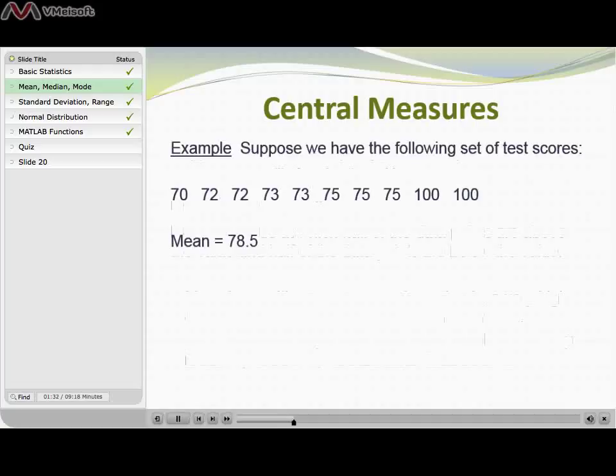Now in this case I don't actually have a middle test score. What I have instead is two test scores that fall in the middle, and in order to find those middle test scores you can see that I have to sort the test scores first from lowest to highest or highest to lowest. So now if I pick out those two middle test scores, I see I have a 73 and a 75 falling in the middle.